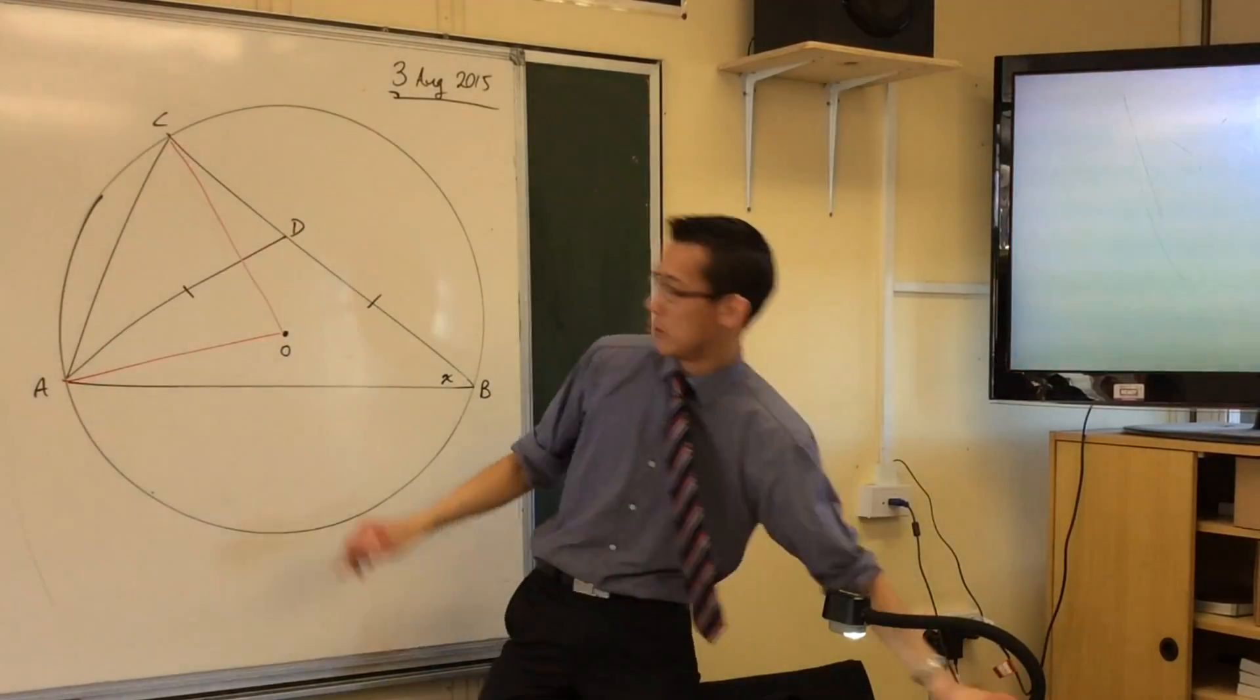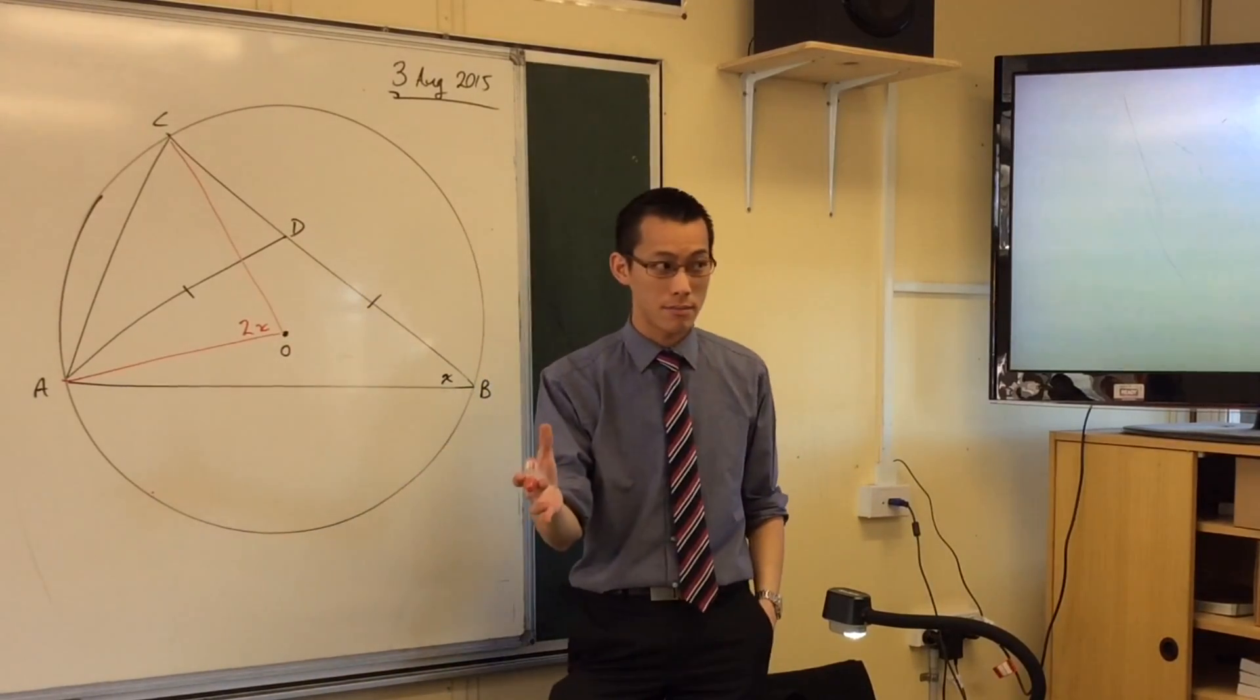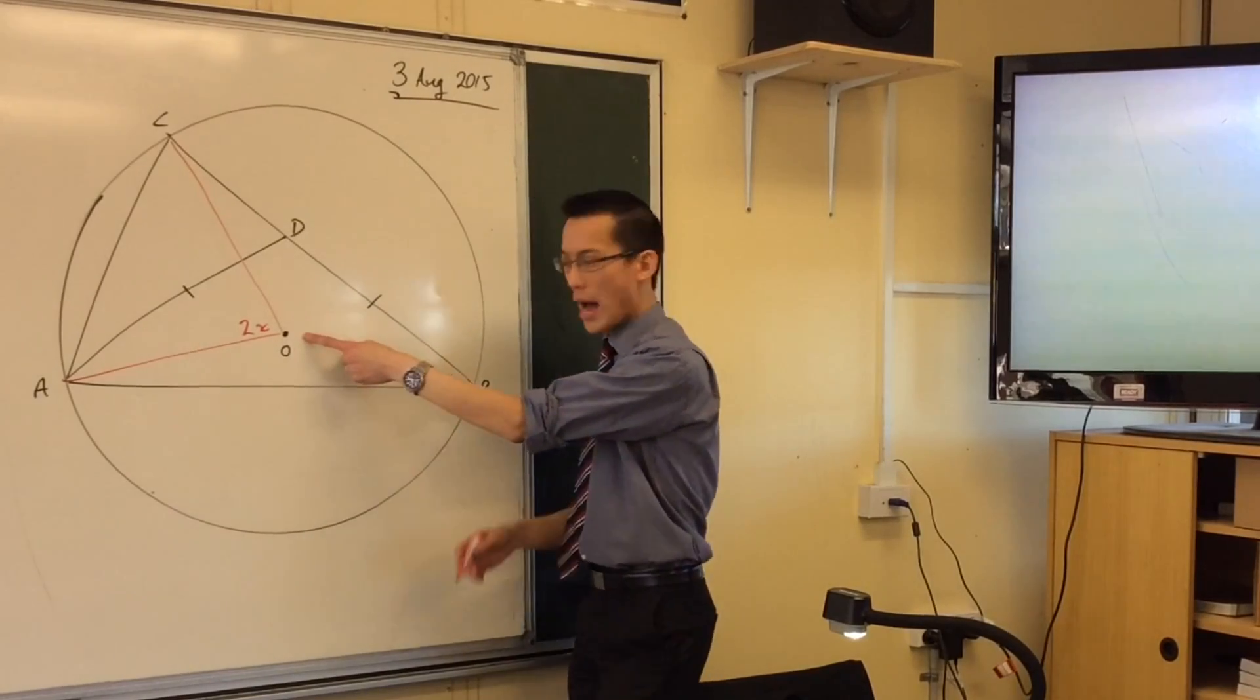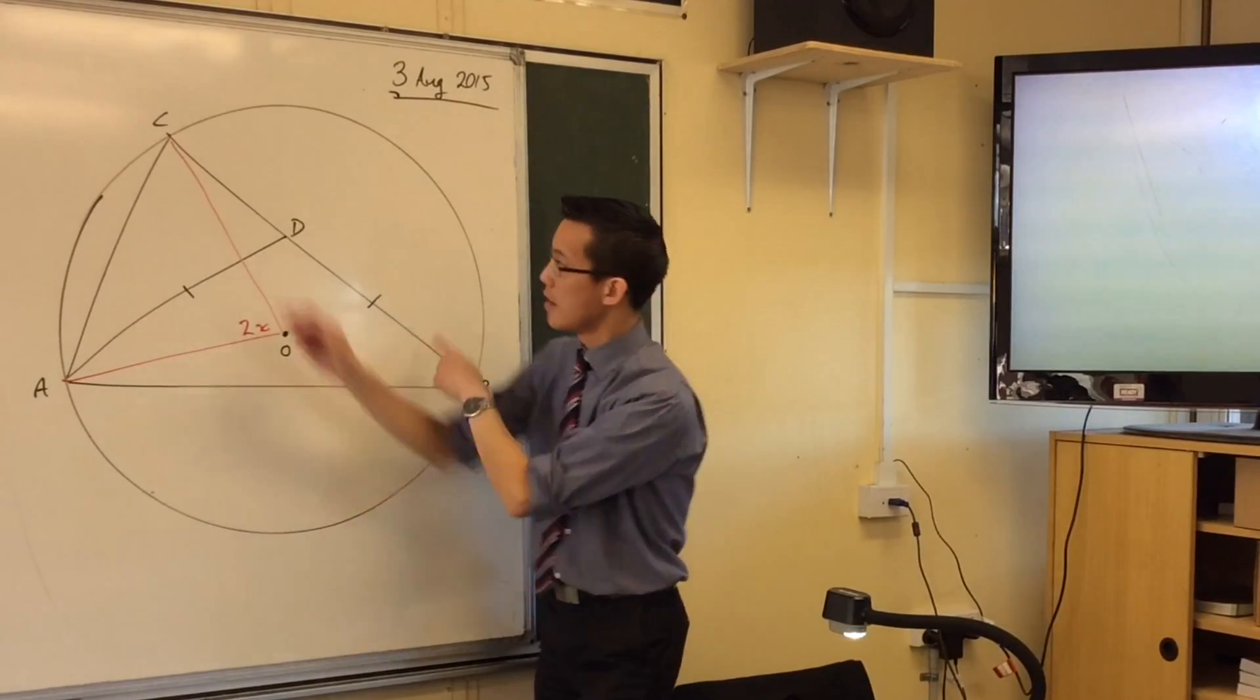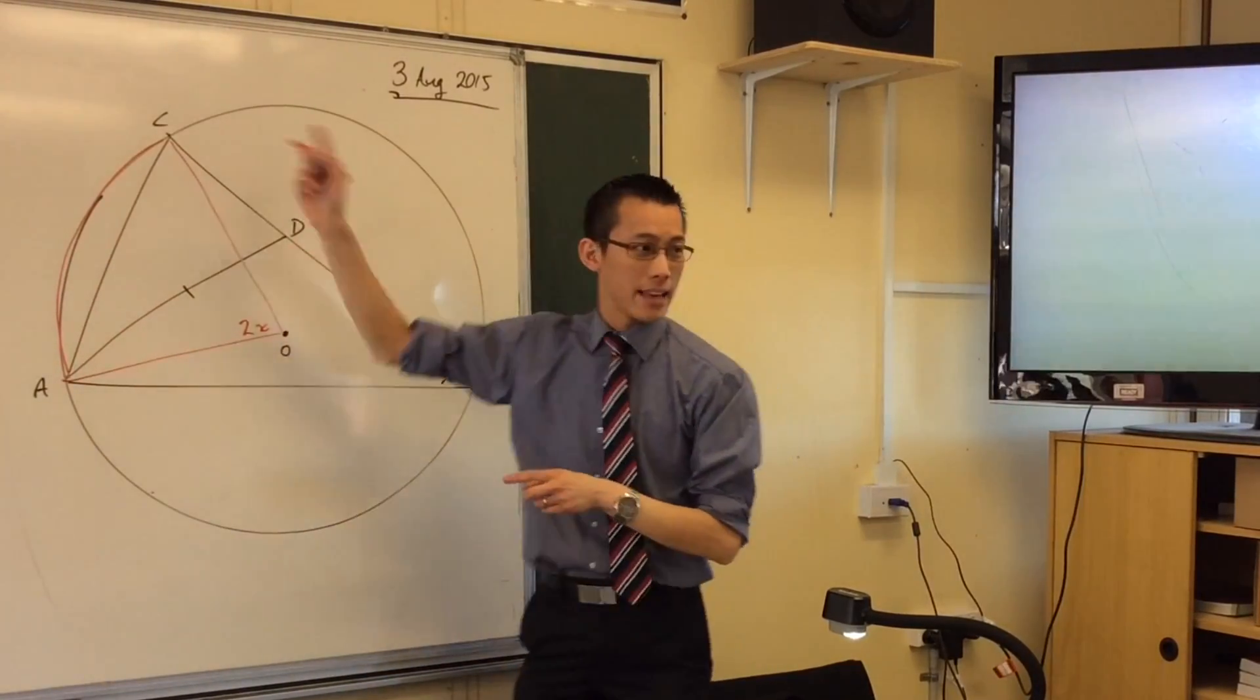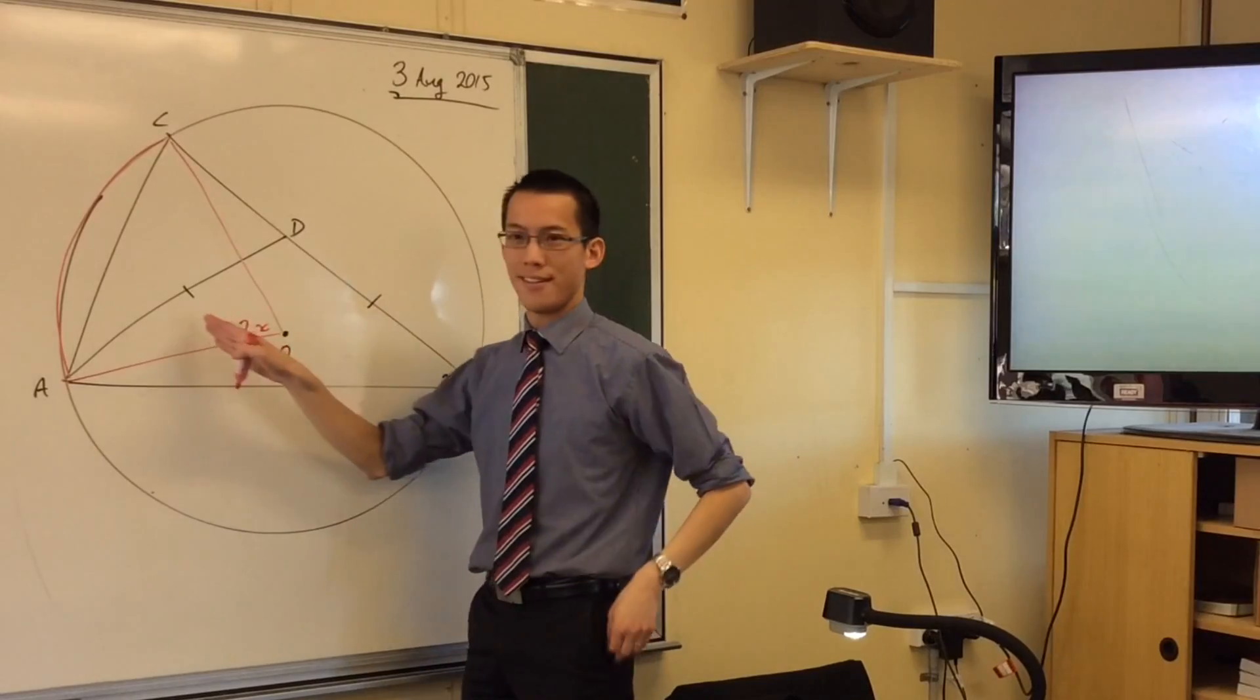So they're given to you that it's 2x, and of course the reason is? Angle in the center is twice the angle at the circumference standing on the same arc. Arc AC. So that's all fine, that's easy.